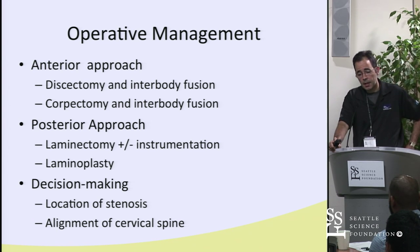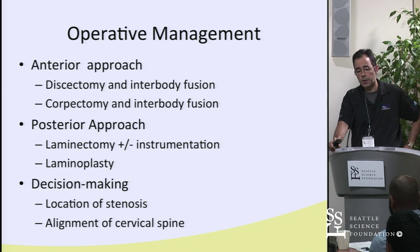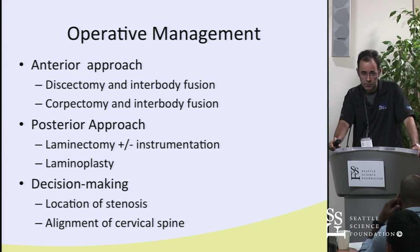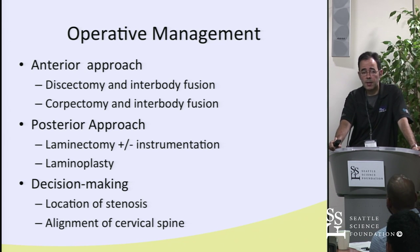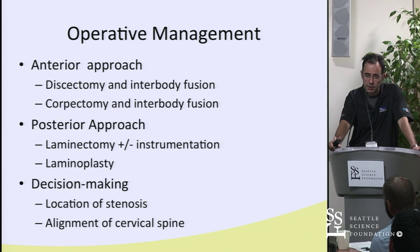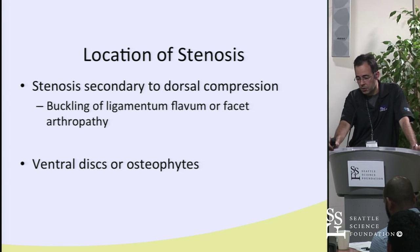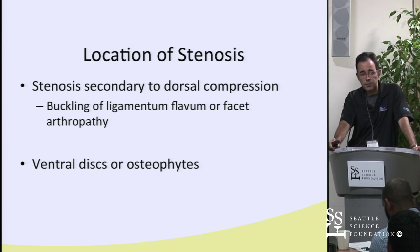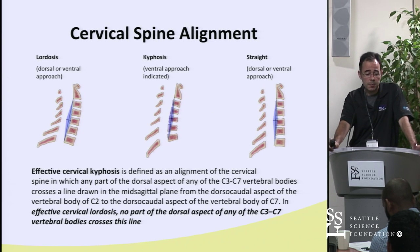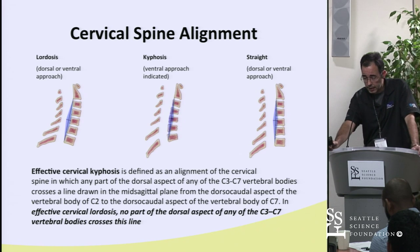Spinal alignment and reducibility also influence the approach choice. If the patient has a fixed kyphotic deformity, an anterior approach is needed to reconstruct the anterior column. Ventral discs or osteophytes indicate an anterior approach. Buckling of the ligamentum flavum indicates a posterior approach. If the patient maintains cervical lordosis, they may be a candidate for laminoplasty.